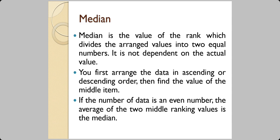The median is the value of the rank which divides the arranged values into two equal halves, and it does not depend on the actual values. To find the median, you arrange the data in ascending or descending order and find the middle item. If the number of data points is even, you take the two middle values and calculate their average — that is your median.